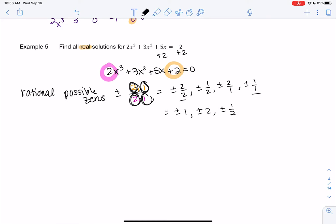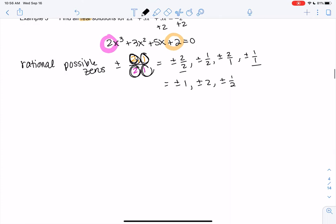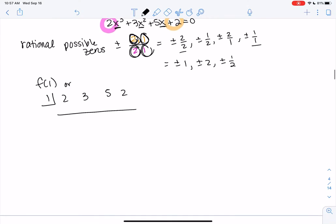So we can plug in to check zeros or we can just start doing synthetic to check. I'm going to do synthetic just to get some practice with it. 2, 3, 5, and 2. Make sure all the terms are there, x cubed, x squared, x. Otherwise you add zeros. So let's just go through the zeros. So if you feel good about synthetic division, why don't you do a couple and we'll catch up.